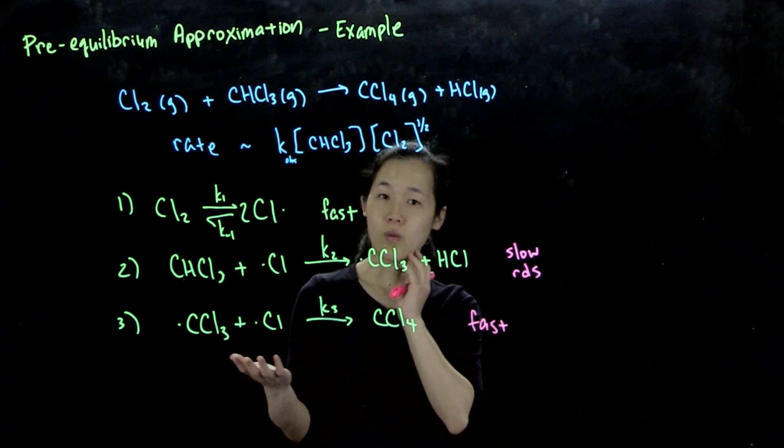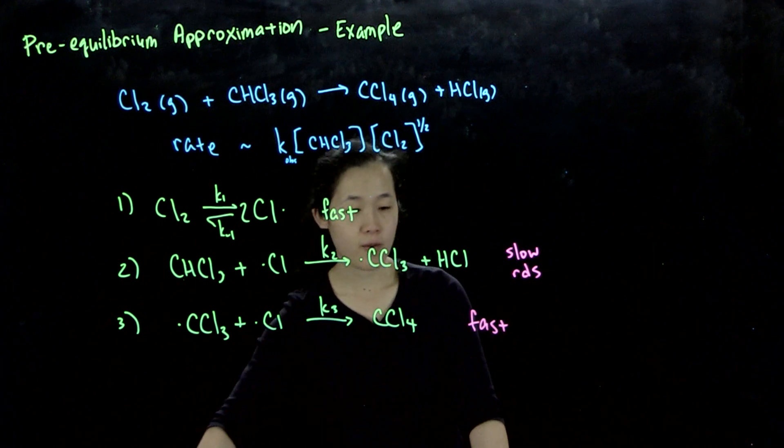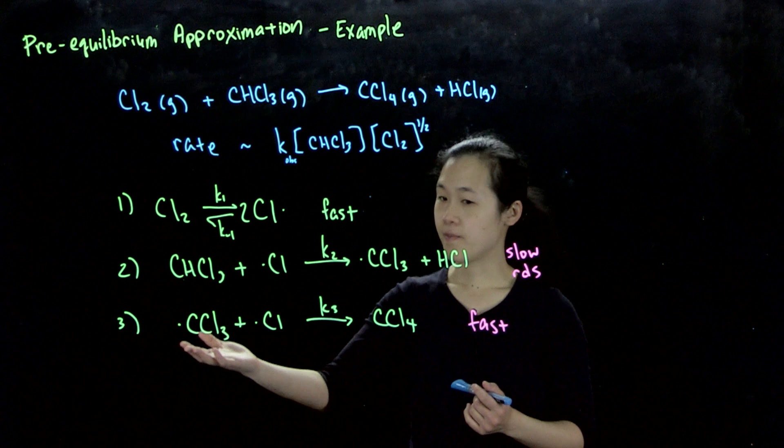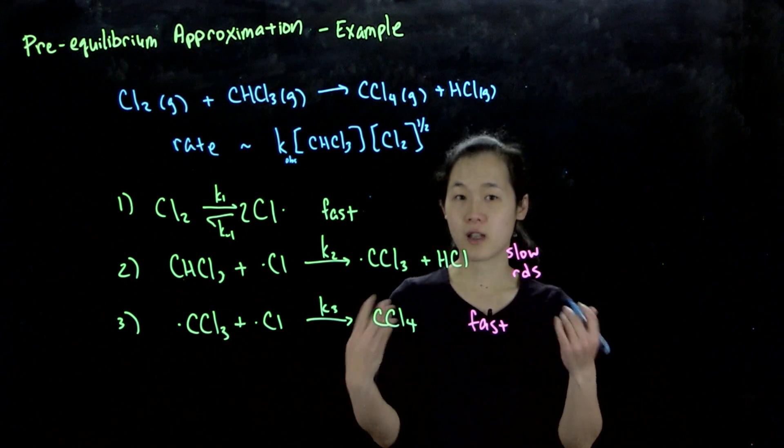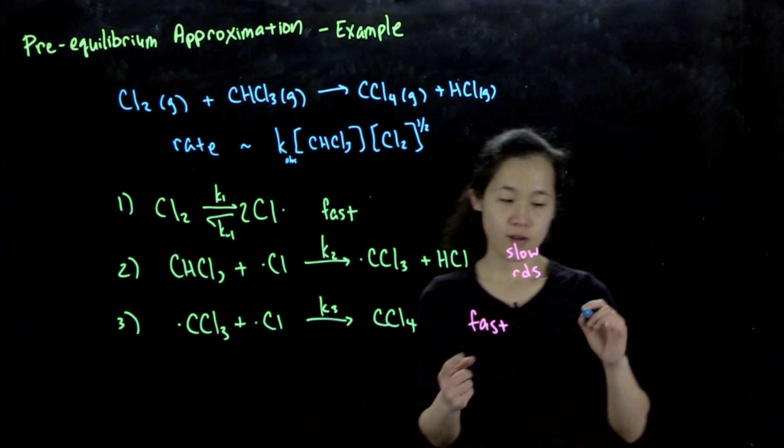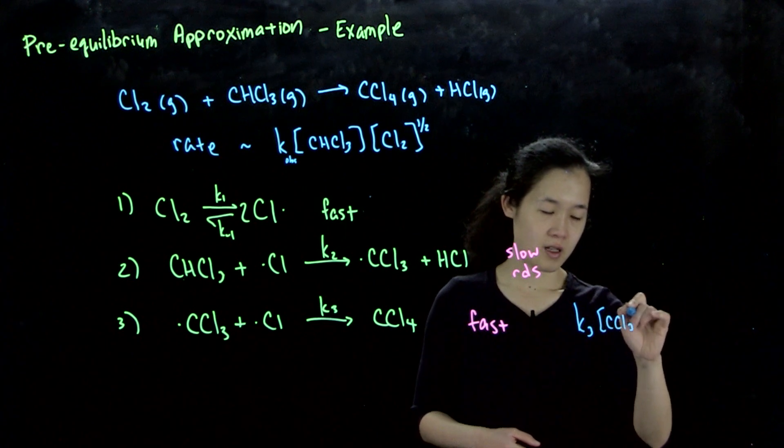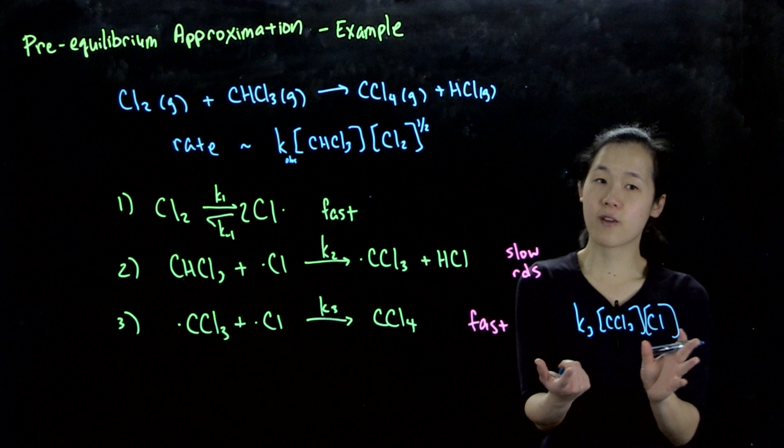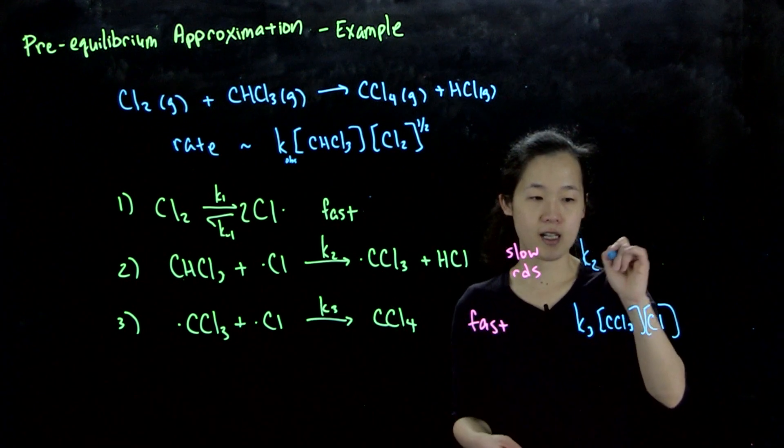We can figure out what our overall rate should be. If a rate-determining step is slow, any step after that doesn't really matter. For all our elementary steps, we can express them in terms of rate because we know the stoichiometry. This rate for step 3 is k₃ times CCl₃ times chlorine atom. This is really fast, so this doesn't matter.